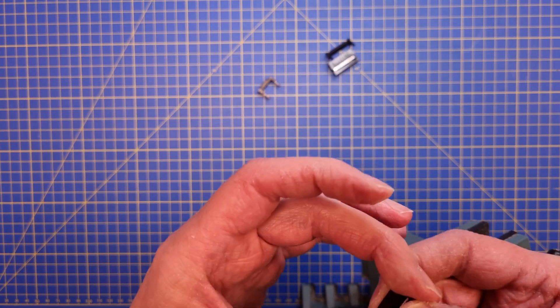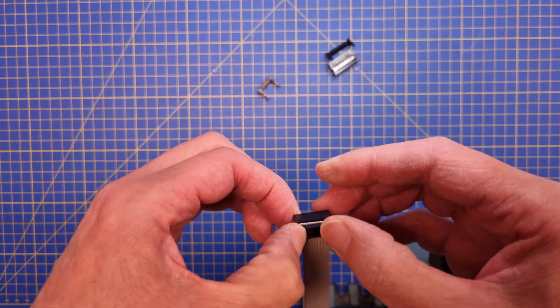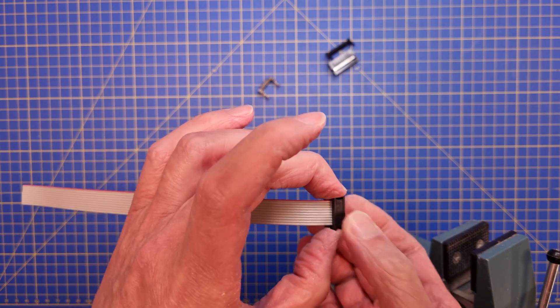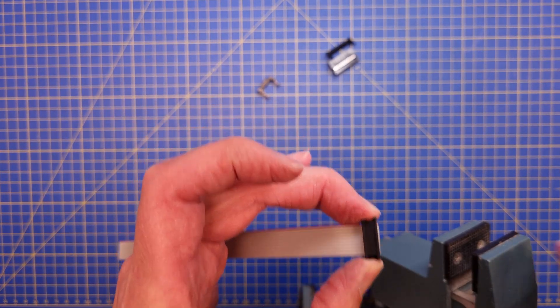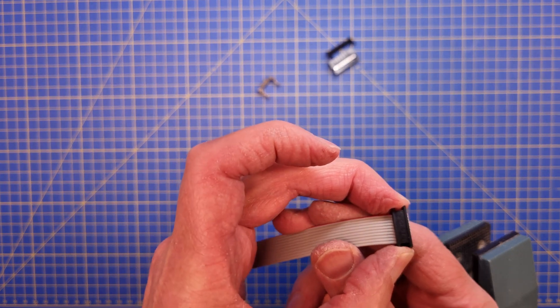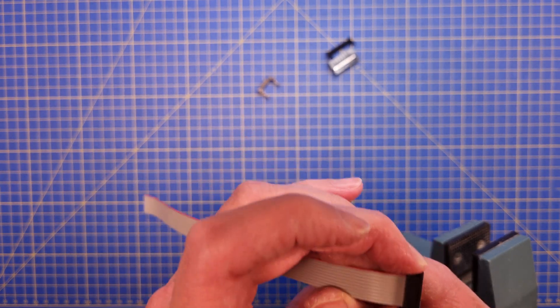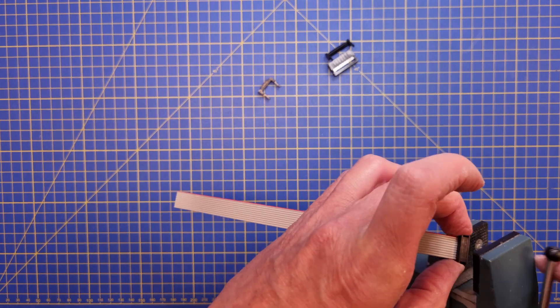Make sure that you let around half a millimeter of the end of the cable protrude on the other side of the IDC connector. If the cable doesn't go all the way through you may have a weak connection both electrically and mechanically.